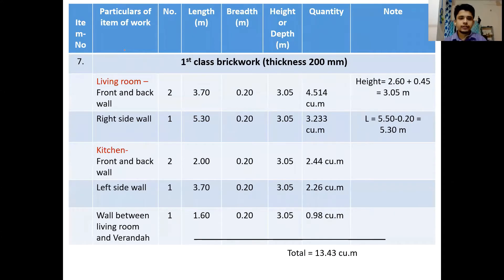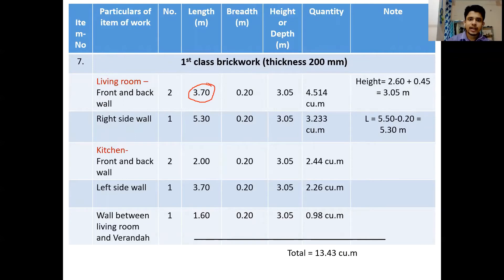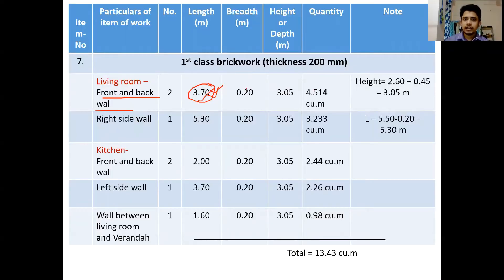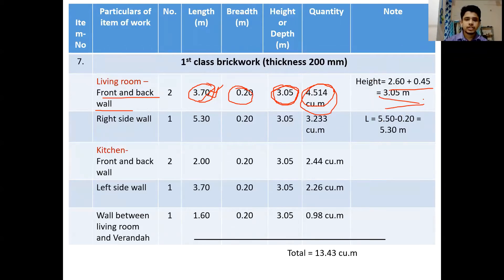After reinforcement, we calculate first-class brick work. Brick work is 200 mm thick at certain locations and 100 mm thick at others, so these are calculated separately. In the living room the room dimension is 3.7 m by 5.5 m. For the front and back walls the length is 3.7 m; we take the thickness of the work and the height of the wall to get the total volume, with the height taken from the sectional drawing.